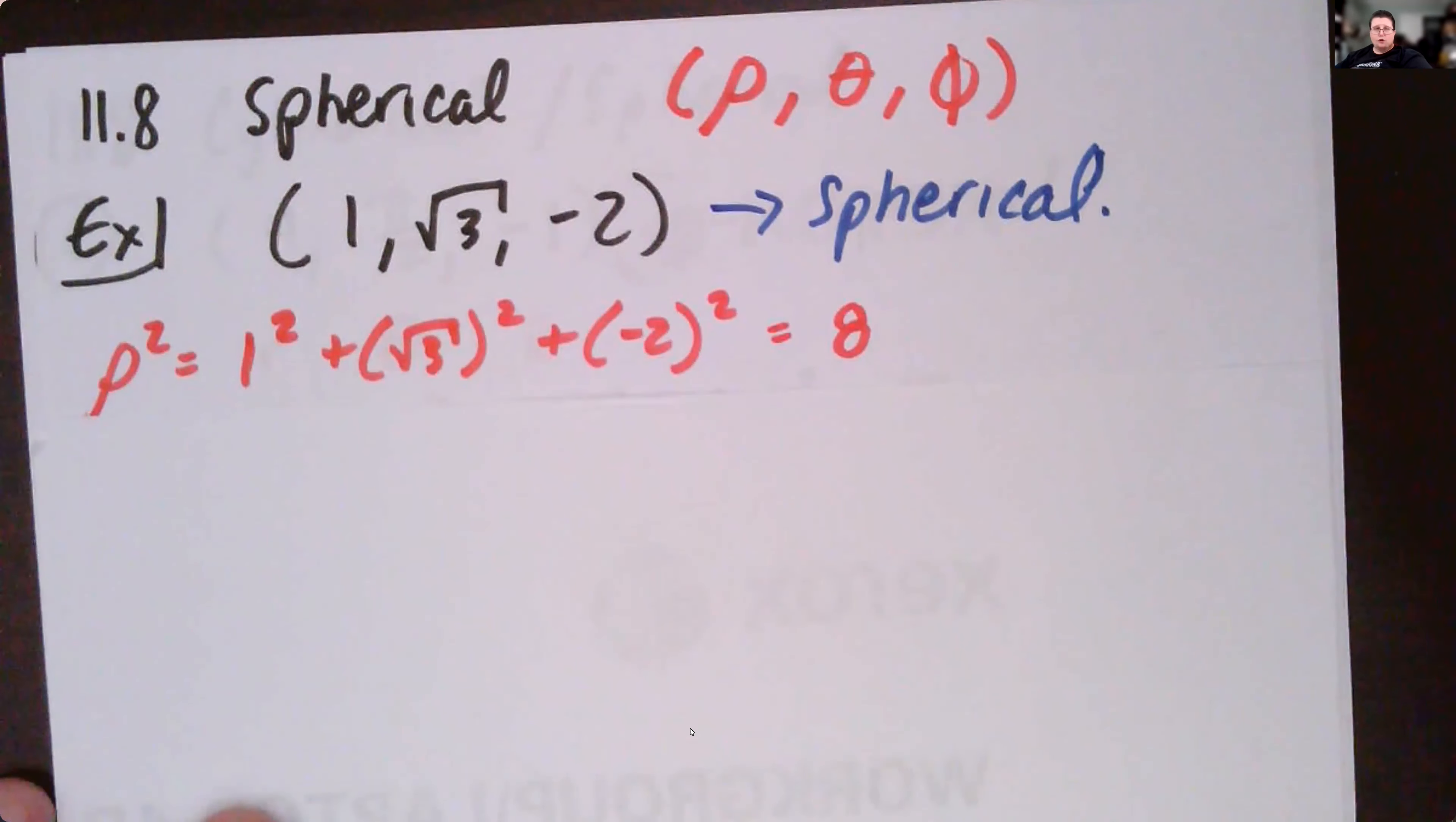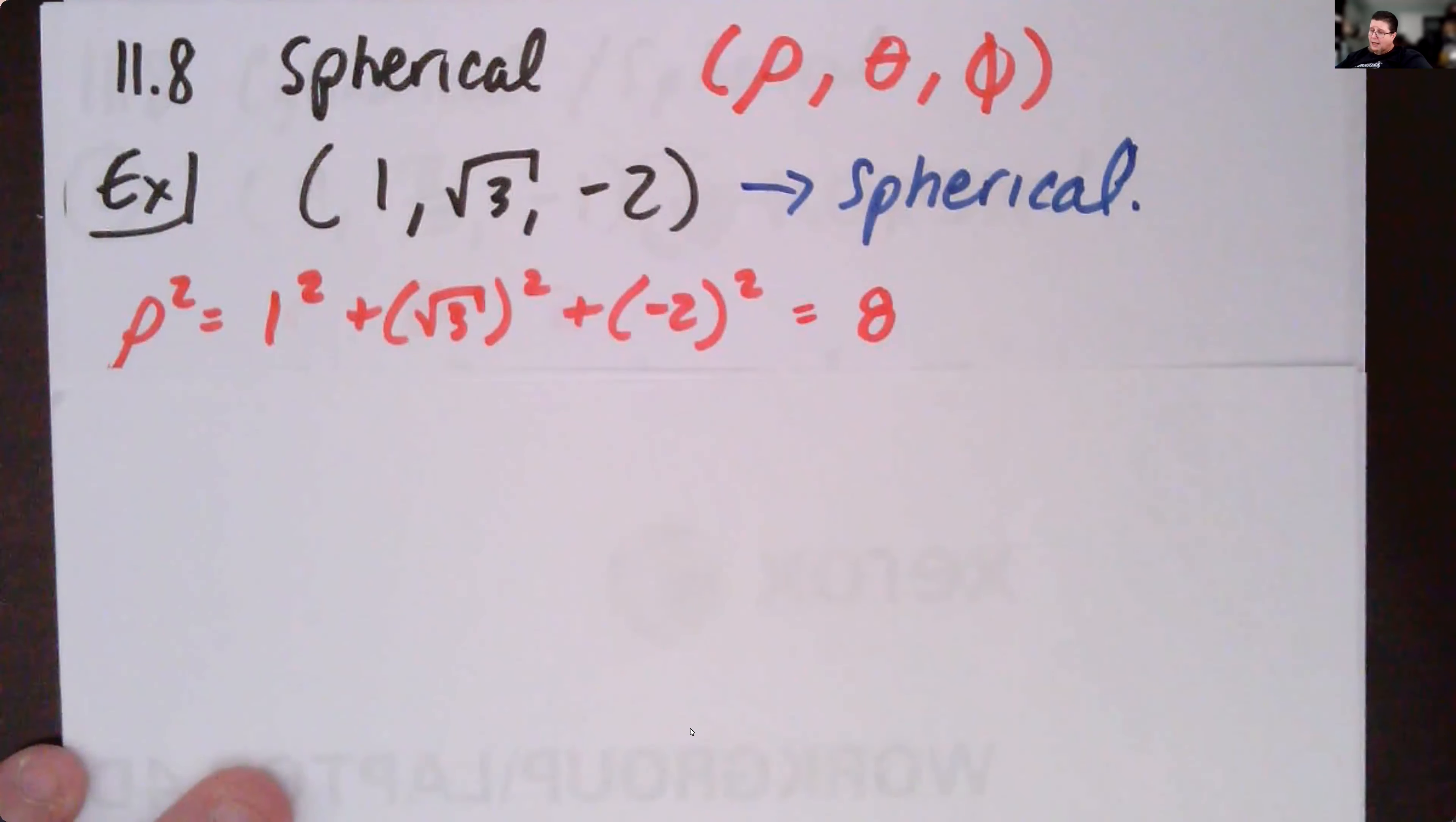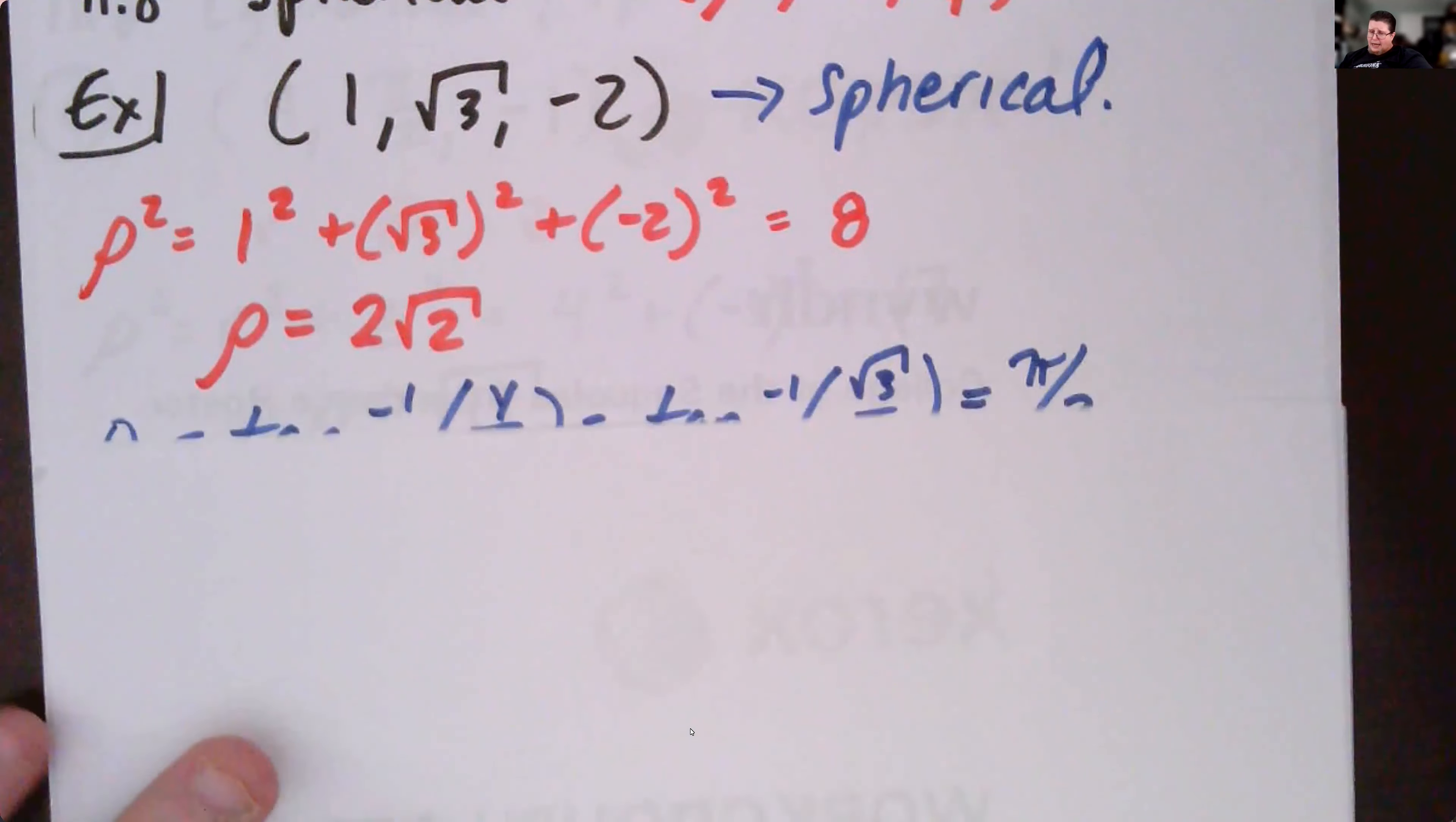So we know rho squared is each of the values squared, sum of one squared and root three squared and negative two squared. We've got one plus three plus four is eight, so rho squared equals eight, rho equals two root two, which is square root eight. So we got rho, we need theta and we need phi.